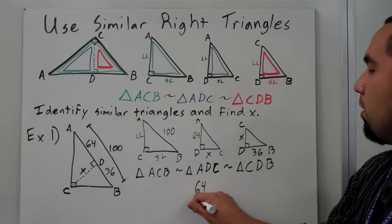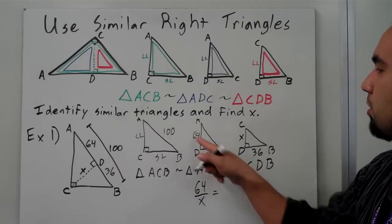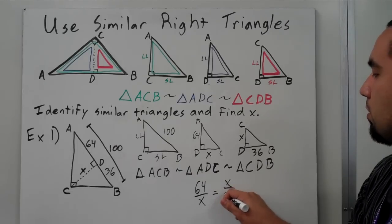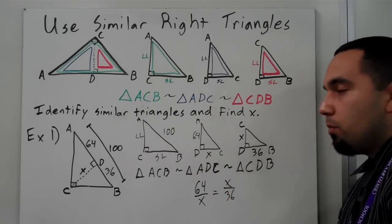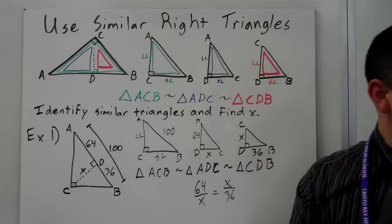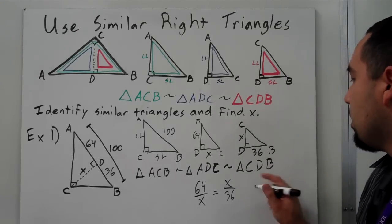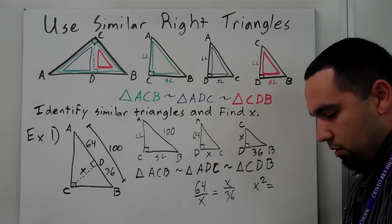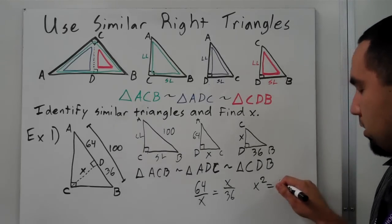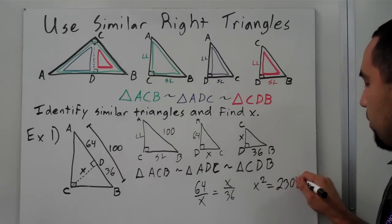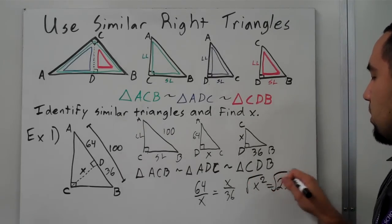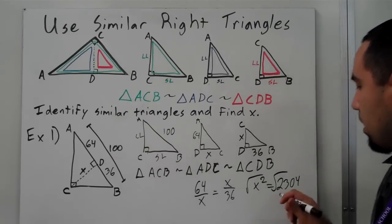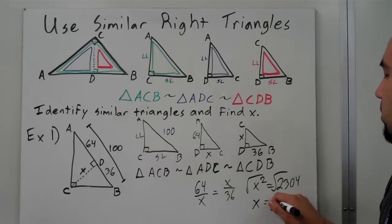I'm going to say 64 over X is equal to X over 36 — that's long leg over short leg equals long leg over short leg. I get X squared is equal to 64 times 36, which gives me 2304. Then I take the square root of that, and I get X equals 48.